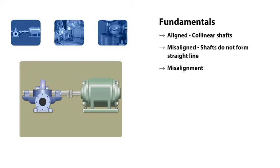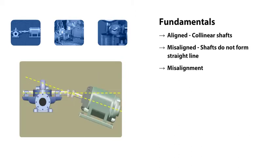Basically, there are two types of misalignment: parallel misalignment and angular misalignment.